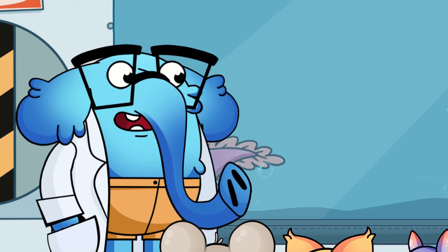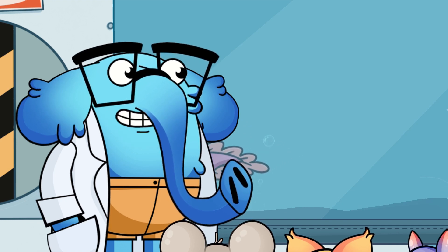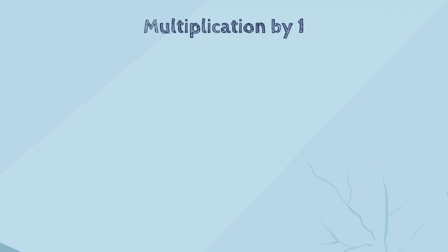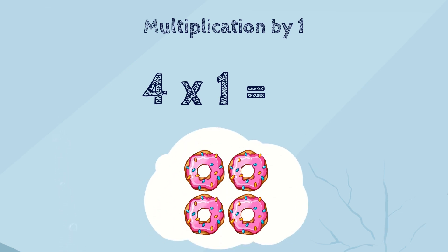Let's start with multiplication by one. For example, let's multiply four by one. First, think about what this means. It means that we will have one group of four items. So how many items do we have in total? Four? Yes, that's true. So, four times one is four.